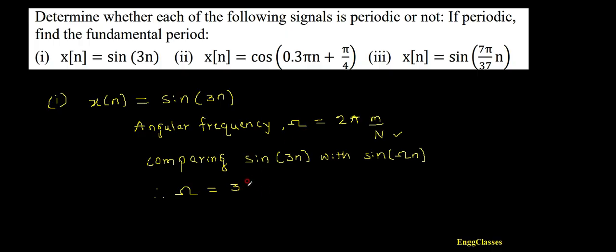As we do not have any pi term here, we would say that this angular frequency cannot be represented as a rational multiple of 2 pi. This angular frequency cannot be represented as 2 pi times m divided by capital N. Hence, this signal is non-periodic.